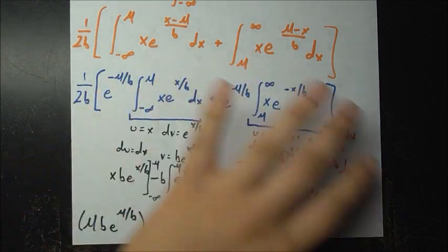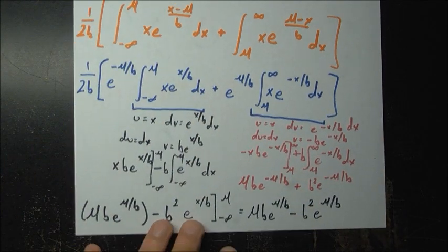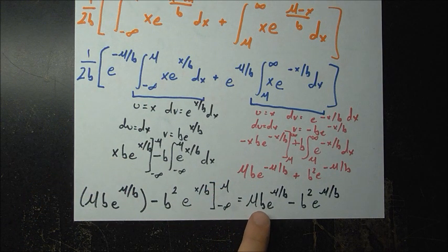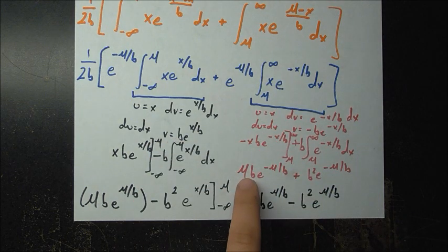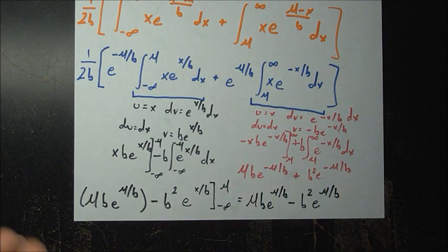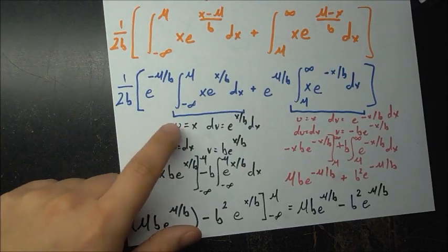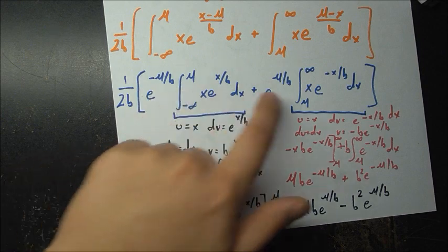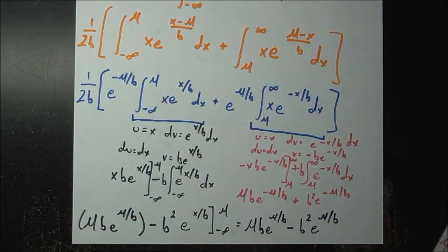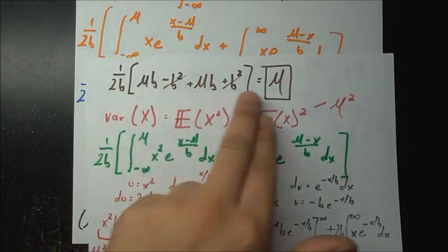Carrying out the calculations, the first integral comes out as mu·b·e to the mu over b minus b squared·e to the mu over b, and the second comes out as mu·b·e to the minus mu over b plus b squared·e to the minus mu over b. It looks like a mess, but it cleans up really nicely after accounting for the constants pulled out earlier. On the next page is the simplified version — let me explain where it comes from.